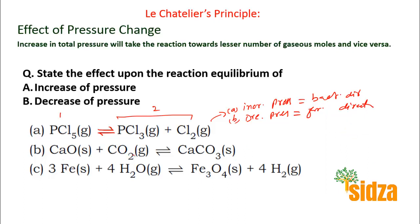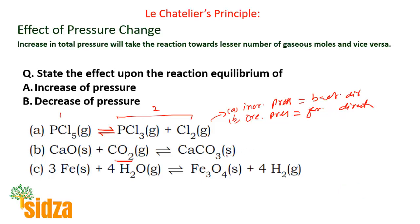Another system: calcium oxide plus carbon dioxide reacts to form calcium carbonate. On the reactant side we have one gaseous mole, and there is no gaseous component on the product side. If you increase the pressure, the system moves in the direction with fewer gaseous moles. You have one mole of gas on the reactant side and none on the product side, so increasing the pressure shifts the equilibrium in the forward direction. The gaseous particles decrease as the reaction proceeds forward, which decreases the pressure.